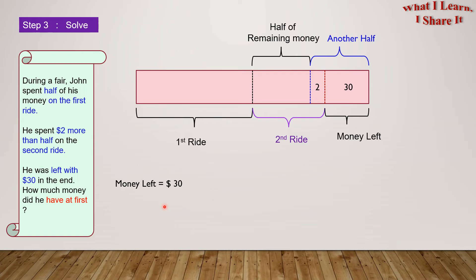The money left equals $30. Now, let's use the working backwards strategy to calculate the total money.